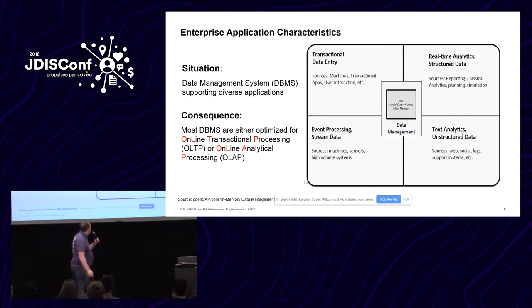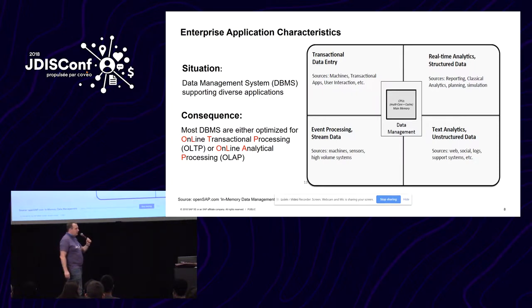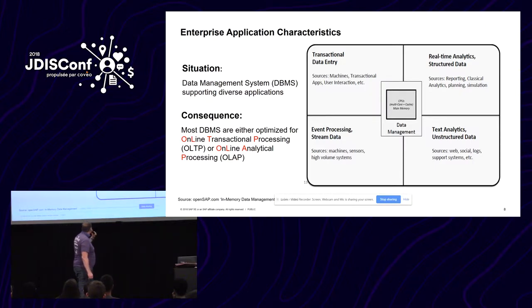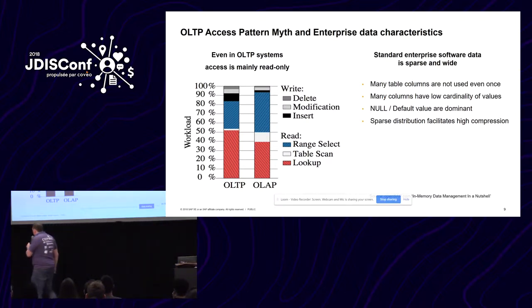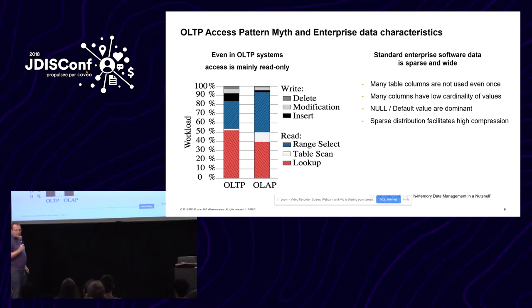Traditional database management systems were mostly dealing with the upper two blocks. The lower ones came later, but there are also specialized solutions for them — not one database doing it all. You had OLTP (online transactional processing) and OLAP (analytical), and you had data replication moving back and forth, which took forever and was not nice. So about 12 to 15 years ago, SAP looked at it and said: is it really true that all analytical and transactional systems are so different? When we look really in enterprise systems — business applications — they're really not that different.